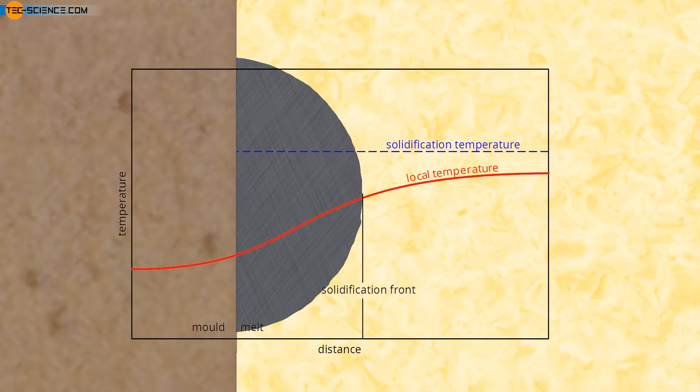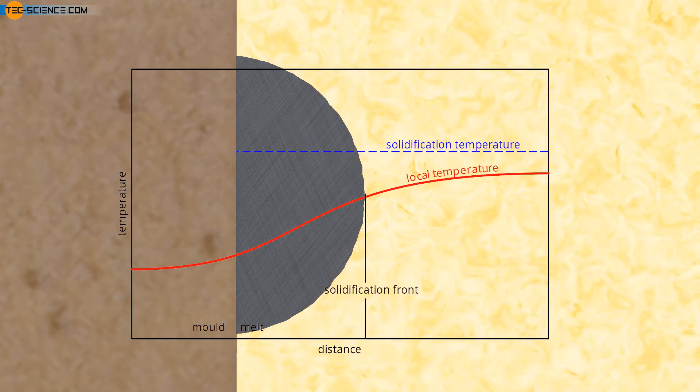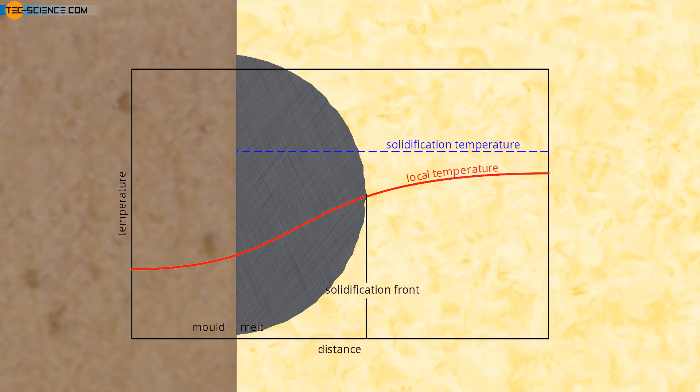Depending on how strong the heat dissipation through the crystal is, rather round crystals grow, which are then called globulites, or rather elongated crystals, which are called columnar crystals.